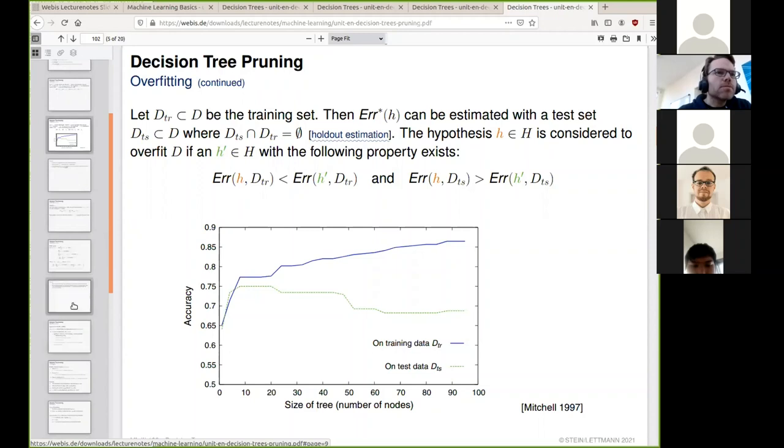Since we measure accuracy here, we must take one minus accuracy to arrive at the error of the hypothesis. If this is our hypothesis at 90-something nodes, the error is one minus the accuracy of 0.85, so this distance to one is our error. The error on training data is definitely smaller than the error of an alternative hypothesis from a previous iteration of the decision tree.